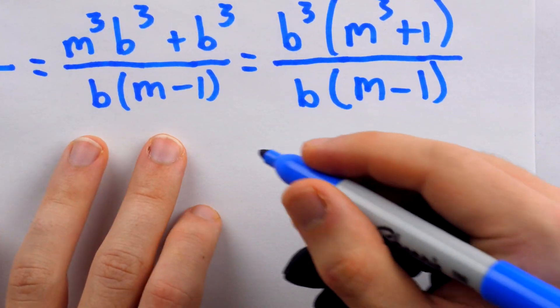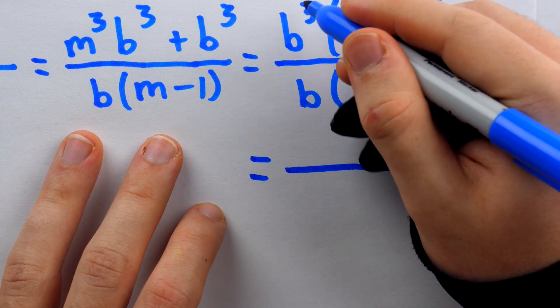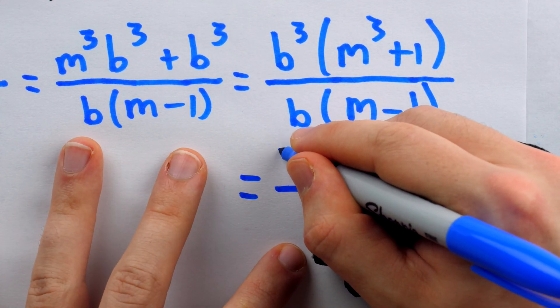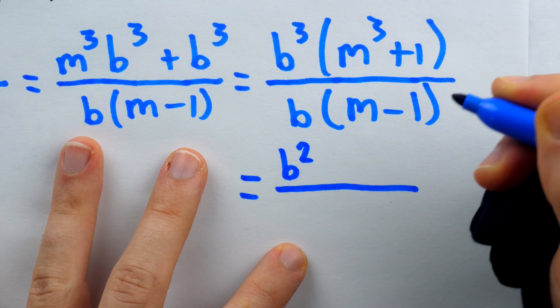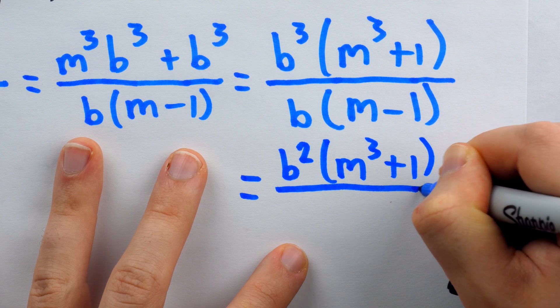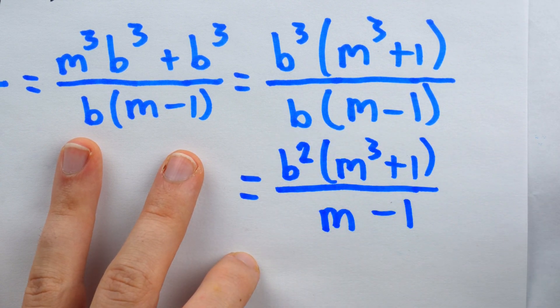So then we see no matter what m is, of course, it can't be one. But aside from that, no matter what m is, we will at least have a factor of b canceling out here in the numerator and denominator. So in the numerator, we would have b² times (m³ + 1). And in the denominator, we would just have m - 1 after doing that cancellation.